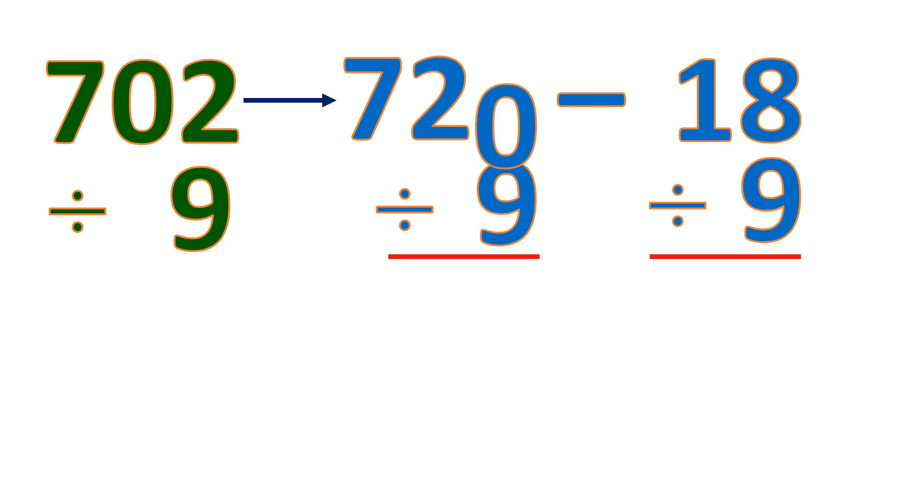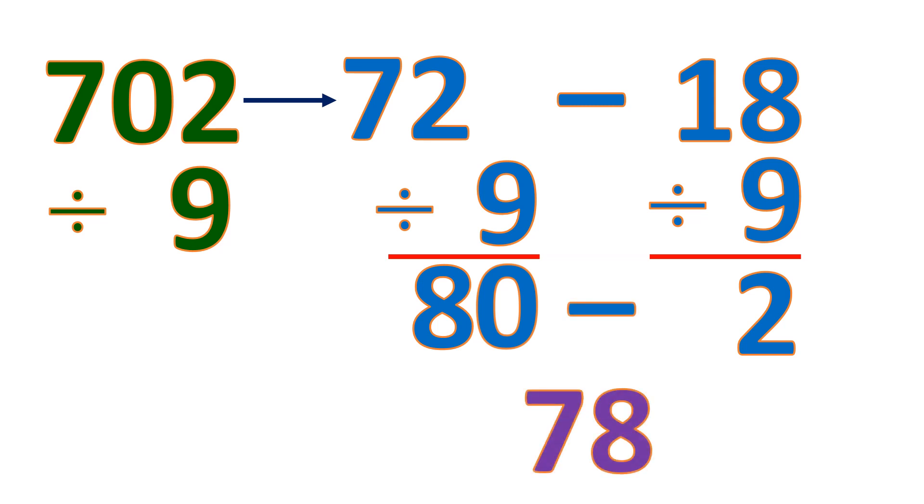720, we'll put the 0 and divide 72 by 9, it's 8. And then 18 divided by 9 is 2. Then we subtract. 80 minus 2 is 78. So 702 divided by 9 is 78.